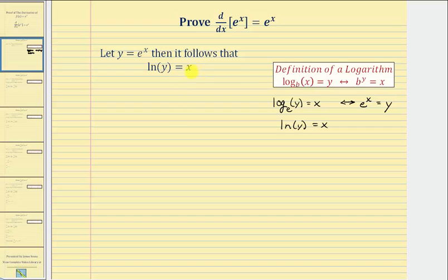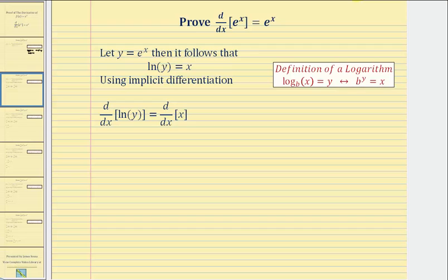So now using this equation, which is equivalent to y equals e to the x, we'll take the derivative of both sides with respect to x and find the derivative using implicit differentiation. So we'd have the derivative of natural log y with respect to x equals the derivative of x with respect to x.